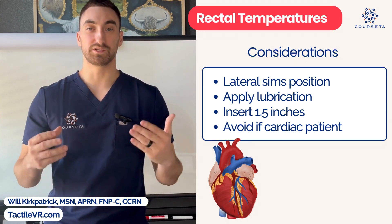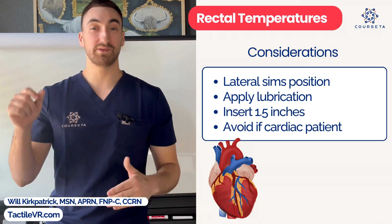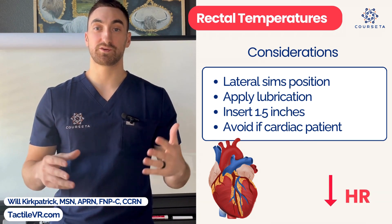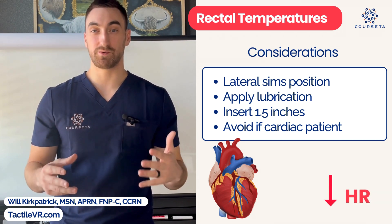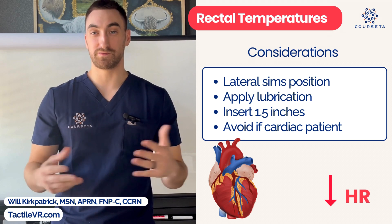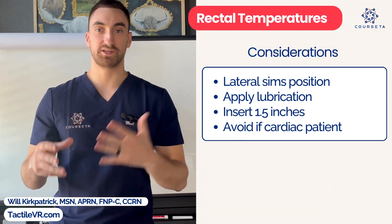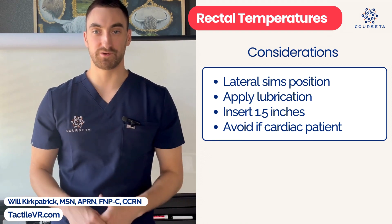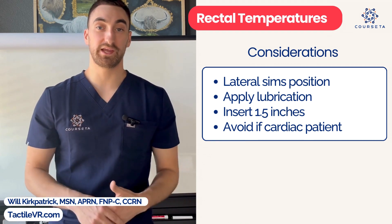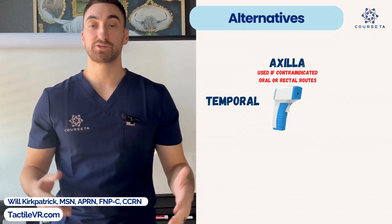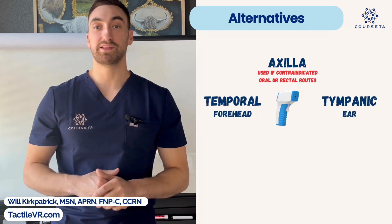If you have a cardiac patient, make sure it is okay per physician order to use a rectal probe. Other contraindications include rectal surgeries, risk for bleeding, or an existing GI bleed. Your next temperature measurement site is the axilla, which is used if both oral and rectal are contraindicated — it is not very accurate but is used when those other sites are unavailable.